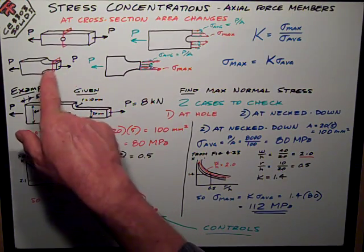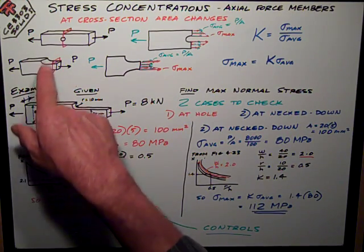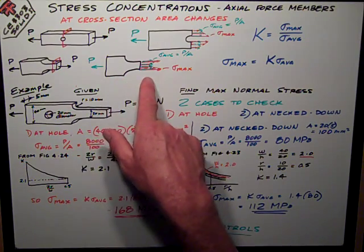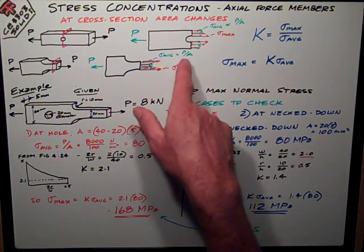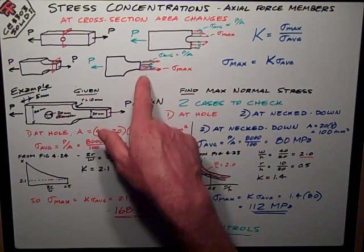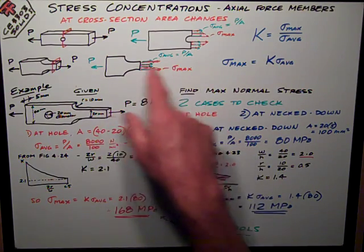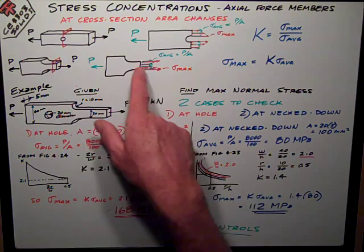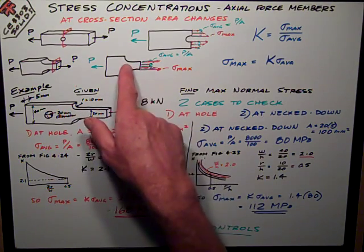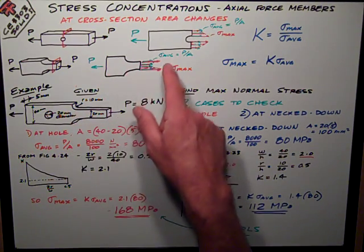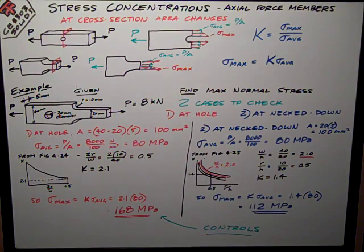If I look at a neck down member, cut a section there right after it's neck down, look at it on the side, I would figure my normal average stress would be P over A in green. But out here on the edges, next to where it's neck down from being the bigger section, I get a higher stress once again, sigma max. Same formula as the holes.